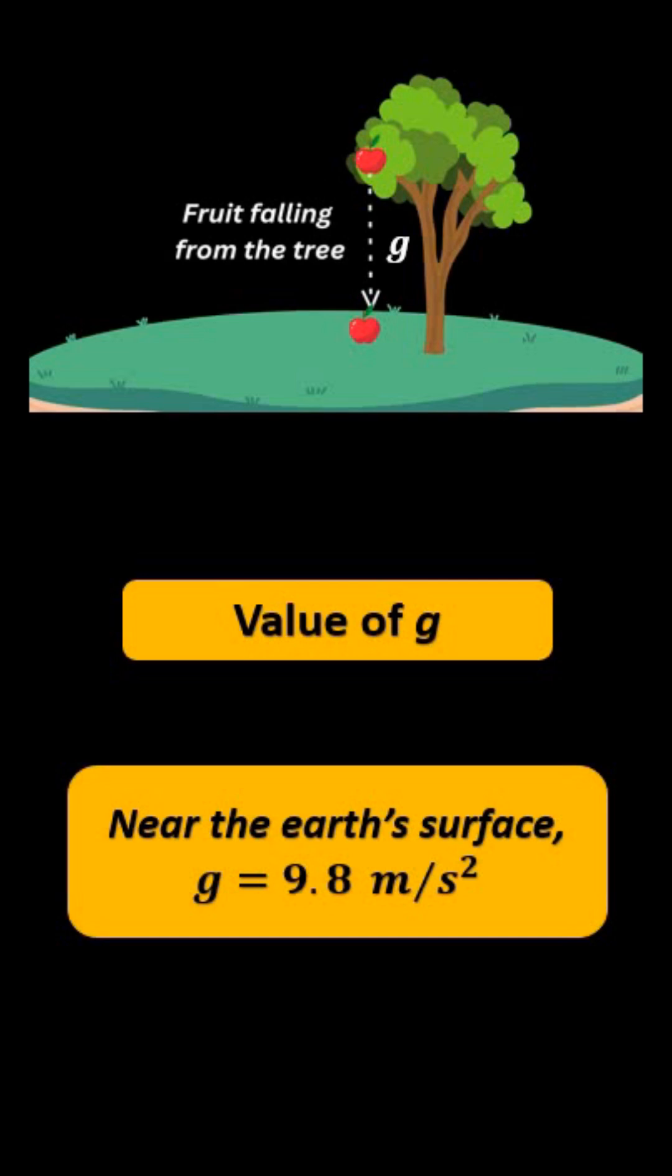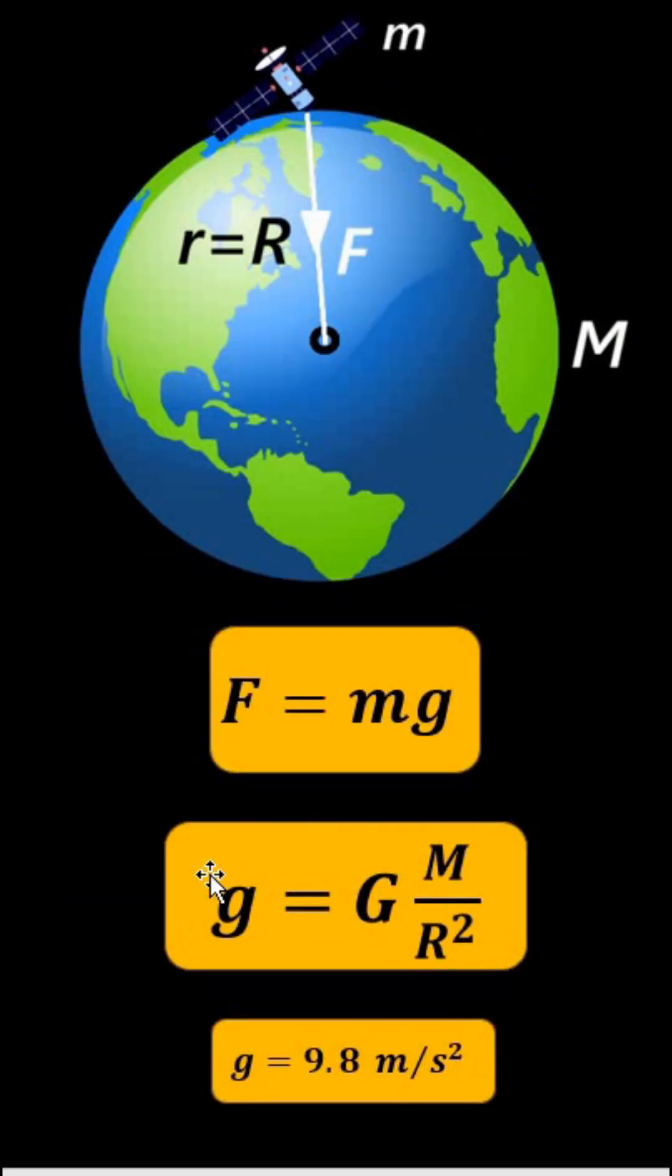And it is equal to small g equals capital G capital M by R square. Here capital G is the universal gravitational constant, capital M is the mass of the Earth, and capital R is the radius of the Earth.